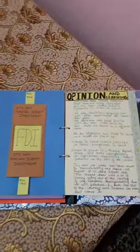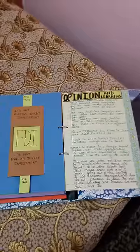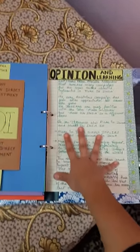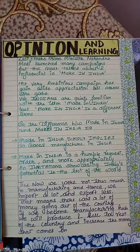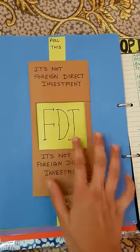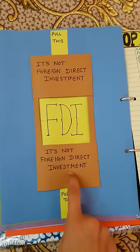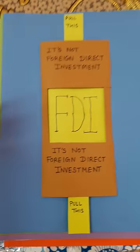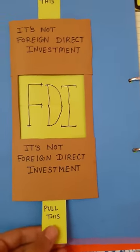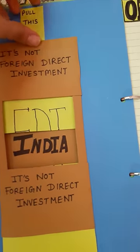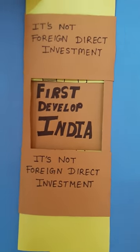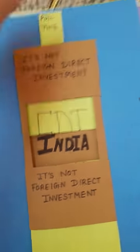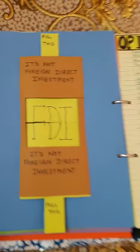This is the last page of my project where I've written about my opinion and learning. This page also has a creative element — there's a flap you pull open to get the answer hidden behind it. FDI we generally know as Foreign Direct Investment, but here both sides say it's not Foreign Direct Investment. When you pull it open, it reveals: FDI stands for 'First Develop India.' It's quite creative, easy to make, and can definitely be used.